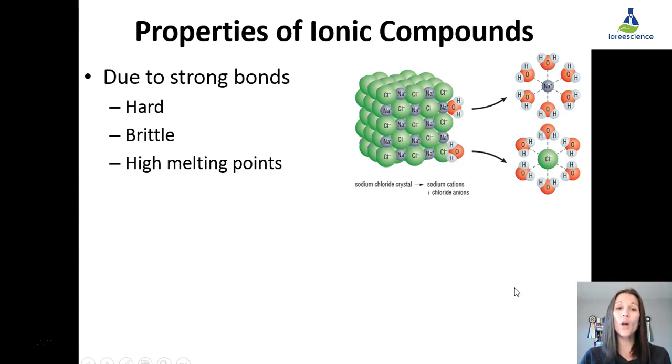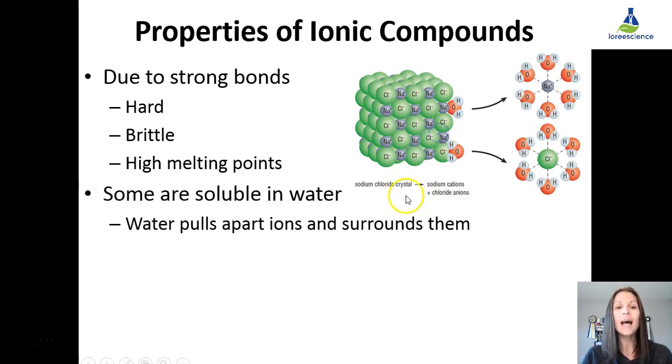Properties of ionic compounds, because the positive negative attraction between cations and anions is relatively strong as compounds. They are hard, they are brittle, and they have very high melting points, because they stick together. In order to melt, you have to break them apart, and they don't break apart very easily.